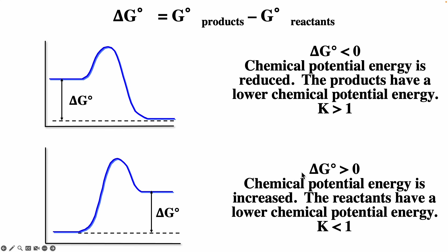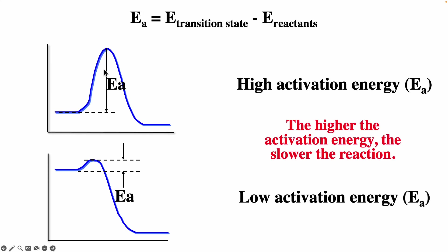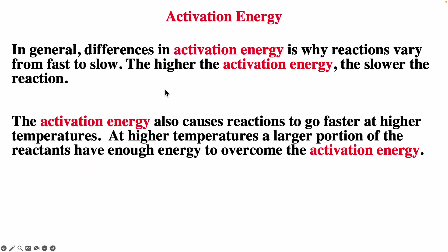Here, ΔG° is greater than 0, so the reactants are lower energy. At equilibrium, we should have mostly reactants, so K would be less than 1. Between these two profiles, the one with higher activation energy will have a slower reaction. In general, the smaller the activation energy, the faster the reaction. Different activation energies are why some reactions are fast and some are slow — the higher the activation energy, the slower the reaction.